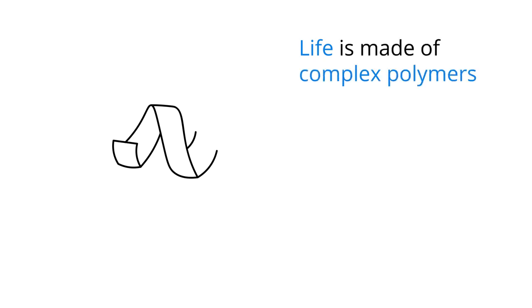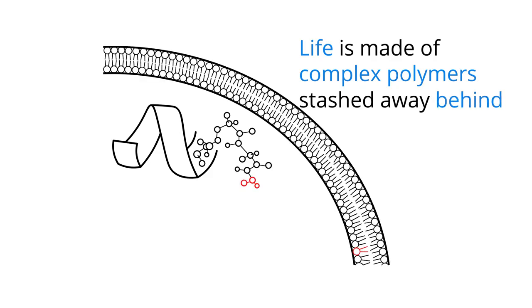Life, even the simplest forms of life, are made up of complex proteins, which are long and complicated chains of amino acids, stashed away in a barrier of lipids from the outside world.